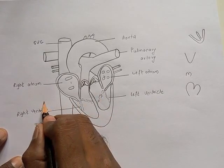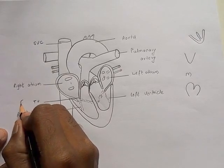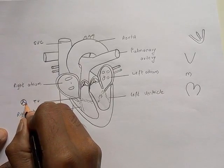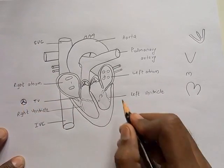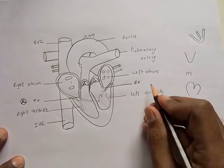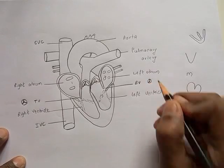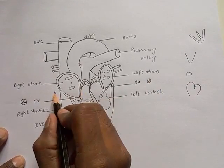There's a valve here, one of the important valves I call it TV, it means tricuspid valve having three cusps. Cusps means flaps or muscles. On the left side you have BV, BV means bicuspid valve, also called mitral valve. It is going to have two cusps.